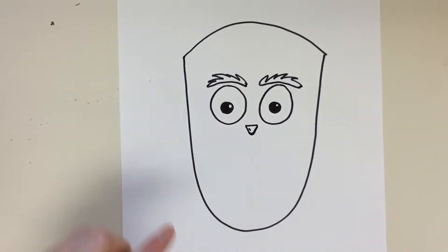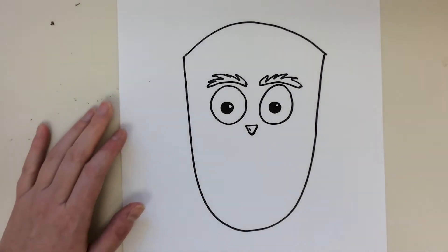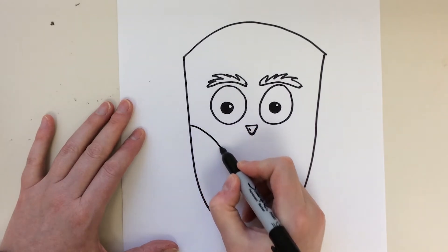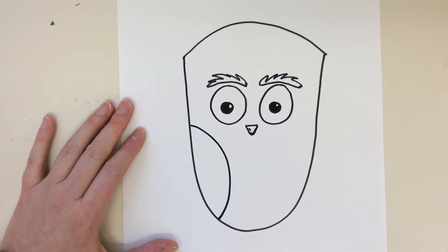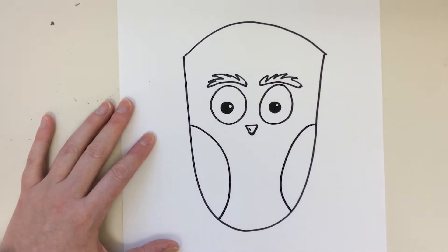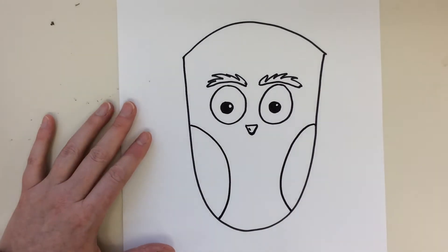Now we're going to make his wings. I'm going to have one tucked in on this side with a curved line and one tucked in on this side with a curved line. Oh guys, we're almost there!